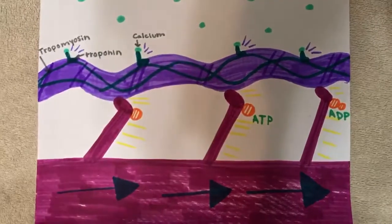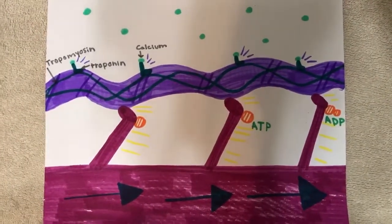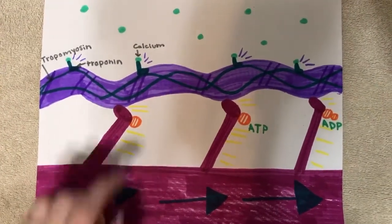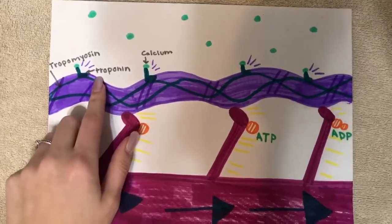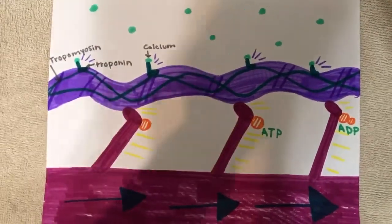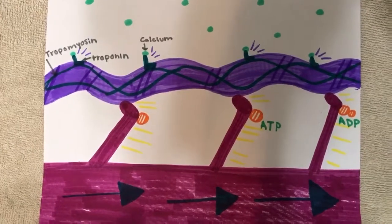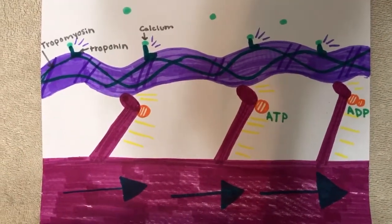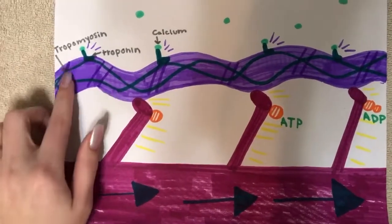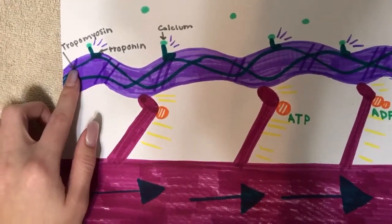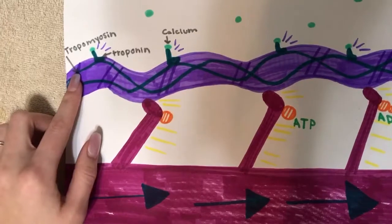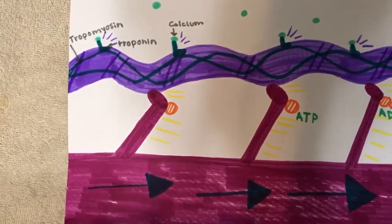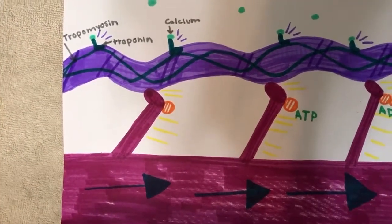So, the calcium that was released into the sarcoplasm will now bind with the troponin, which is right here, and the troponin will then change shape, exposing binding sites for myosin. When the troponin changes shape, it causes the tropomyosin, which is right here, the blue, to move upwards, allowing for actin to bind to the myosin head, starting the power stroke process.